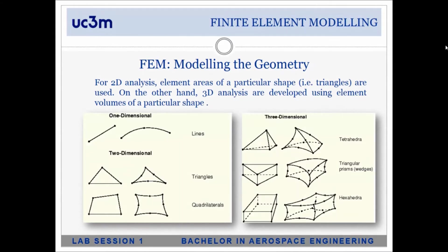Depending on the geometry we are modeling, we may use different kinds of elements. For one-dimensional analysis, we use lines and bars — perfect for analyzing truss structures or mechanisms. We also have two-dimensional elements, which are surface elements with only in-plane degrees of freedom. And finally, we have three-dimensional elements in which all degrees of freedom are active.